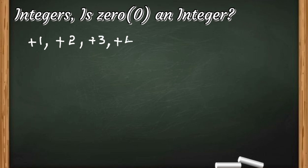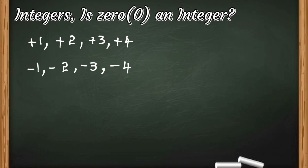Integers are numbers with positive and negative signs. Now here, in the first line, I have written plus 1, plus 2, plus 3, plus 4. They are positive integers. Numbers with positive sign are called as positive integers.